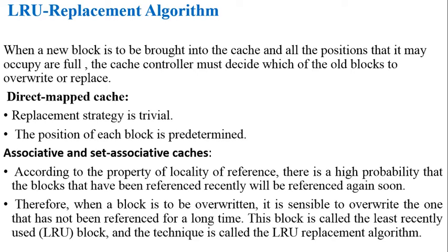In case of associative and set-associative caches, a memory block can be placed anywhere. So if the cache memory is completely full and a new block is requested from memory, we need to select one block from the cache for replacement. In order to choose one among the different cache blocks, we need a certain algorithm.